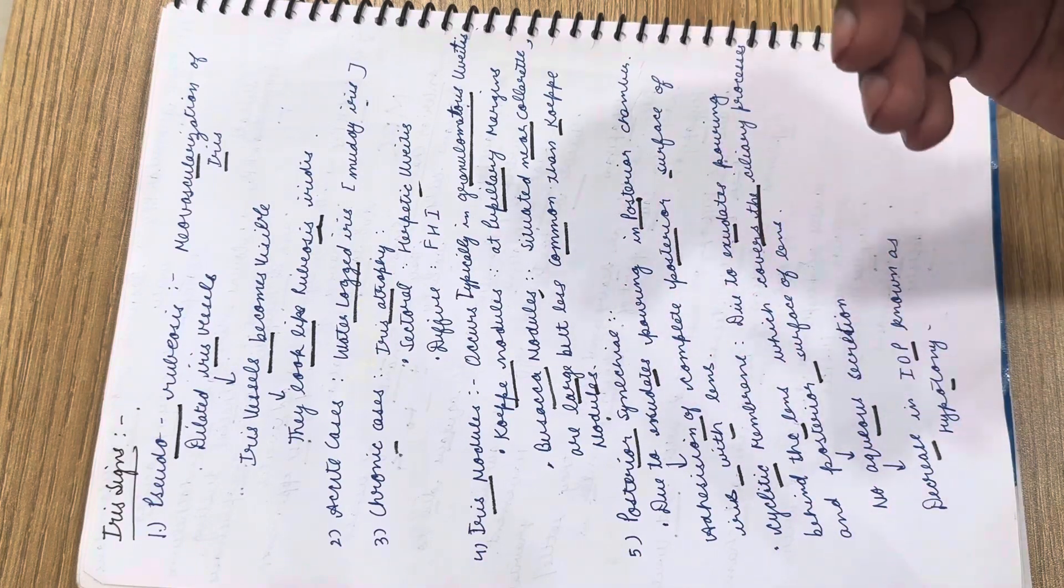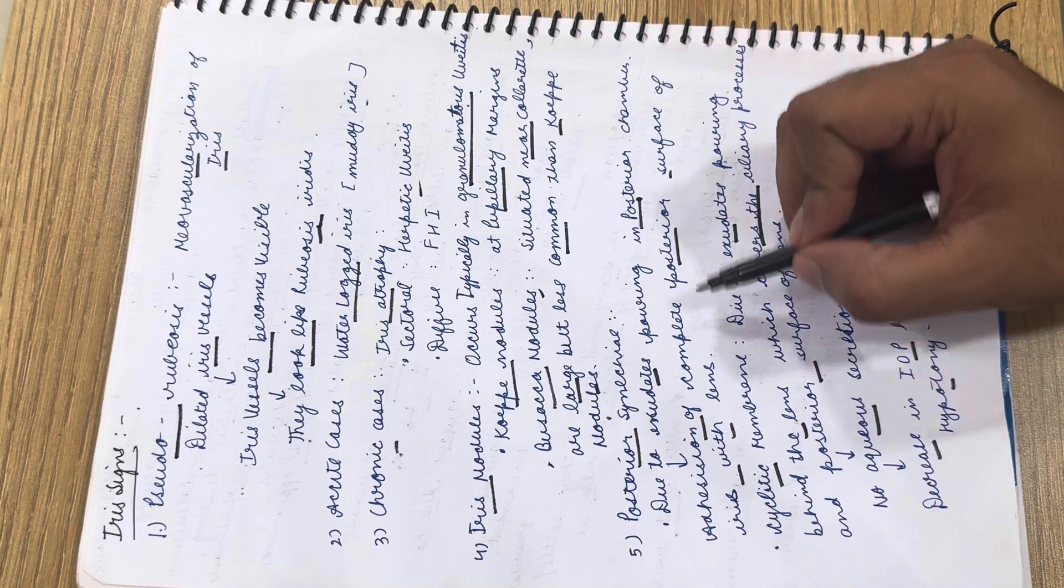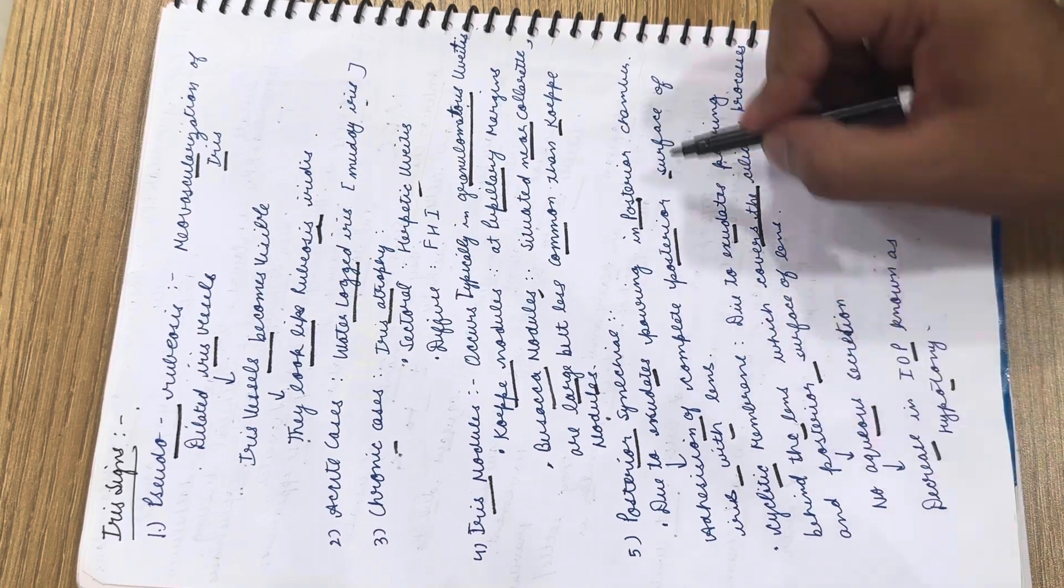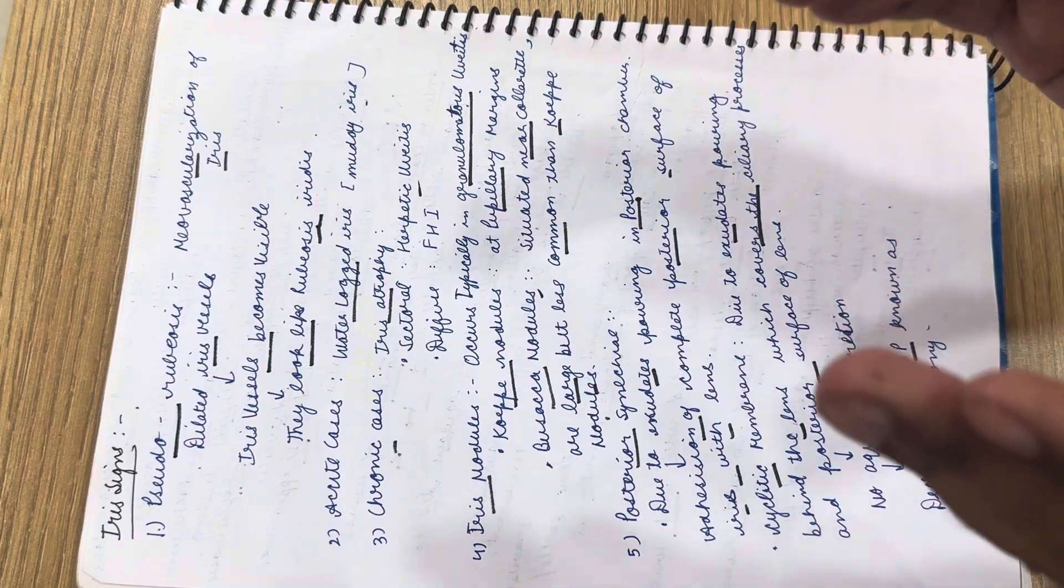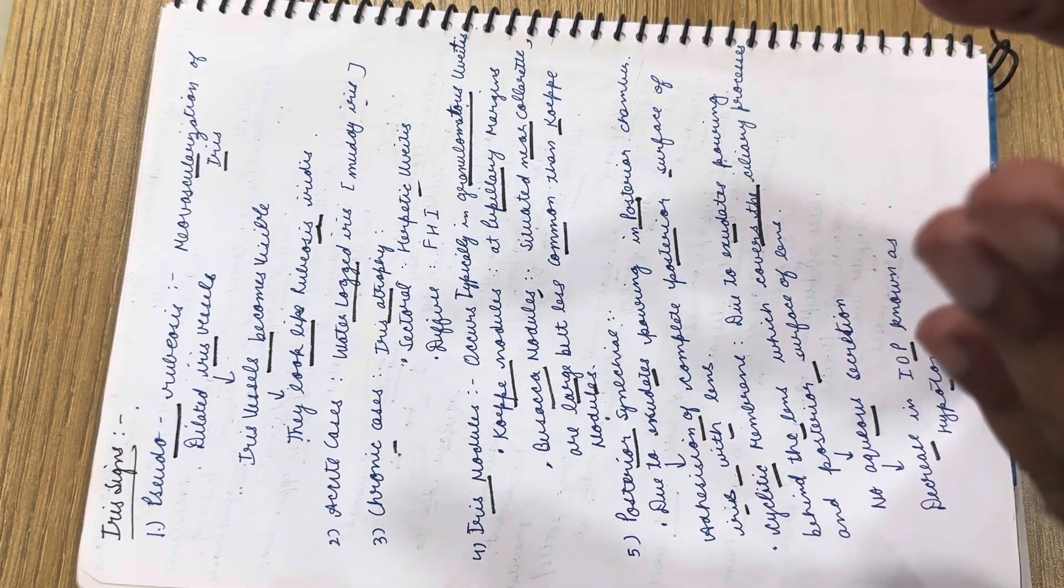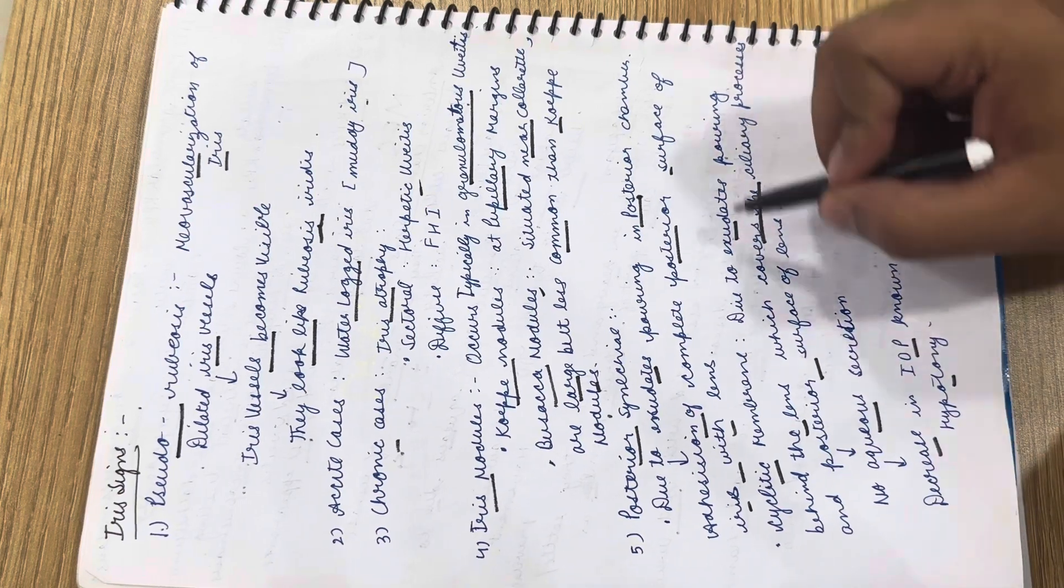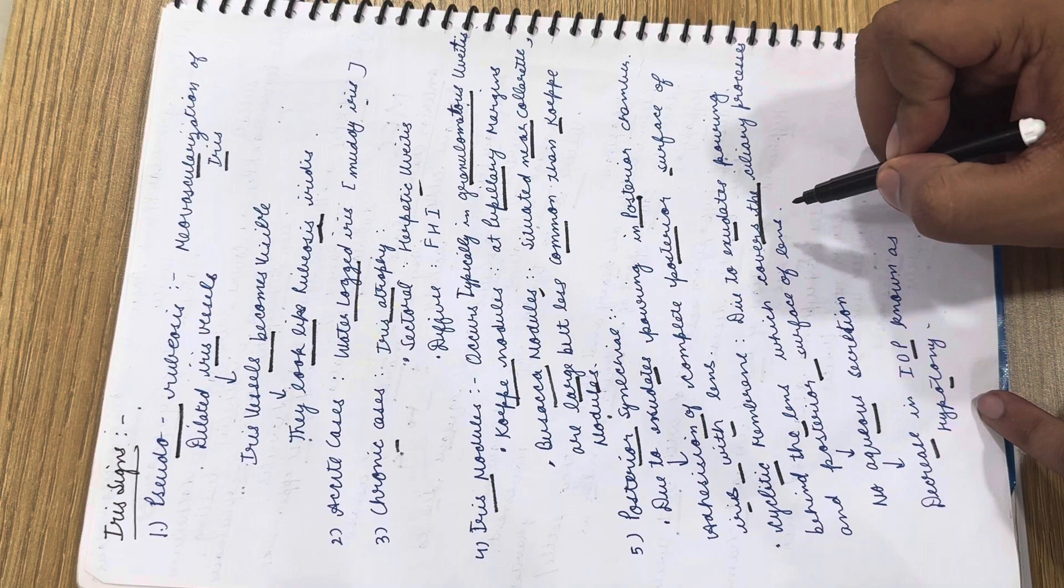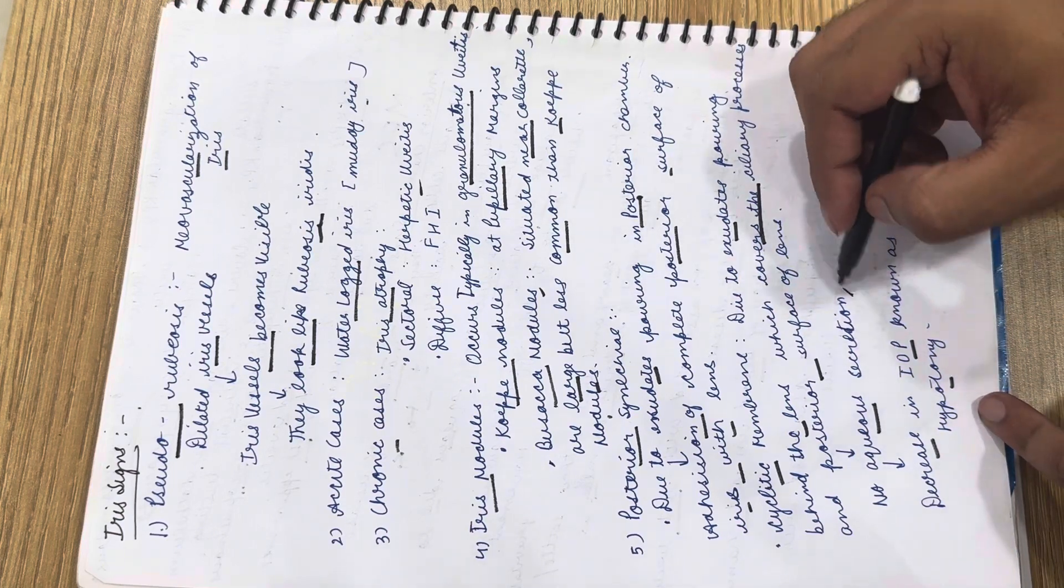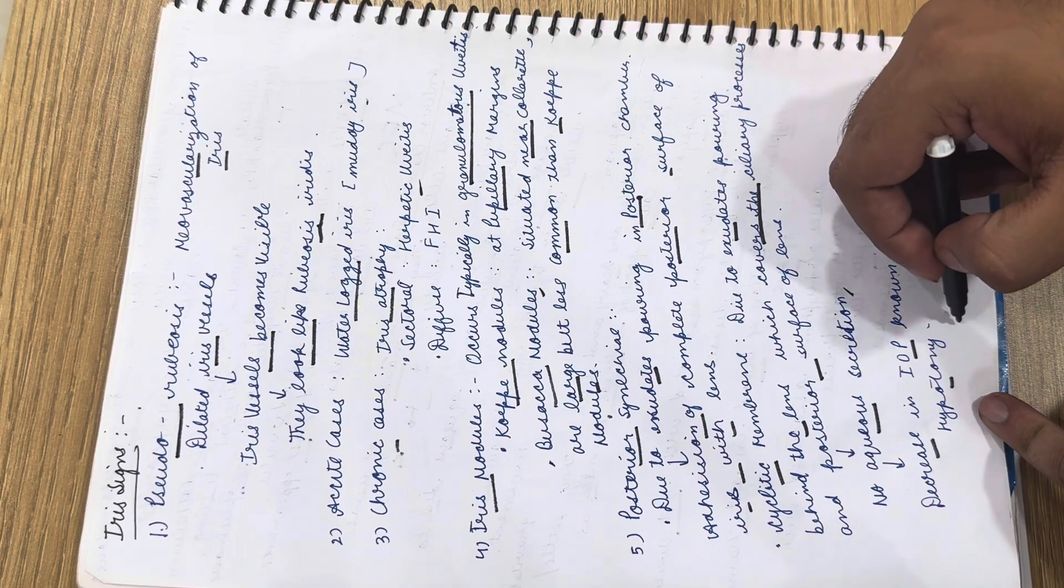Posterior synechiae: due to exudates pouring in the posterior chamber, there is adhesion of the complete posterior surface of iris with the lens. Cyclitic membrane forms due to exudates pouring behind the lens, which covers the ciliary process and posterior surface of the lens. As a result, there is no aqueous secretion and hence decreased IOP, known as hypotony.